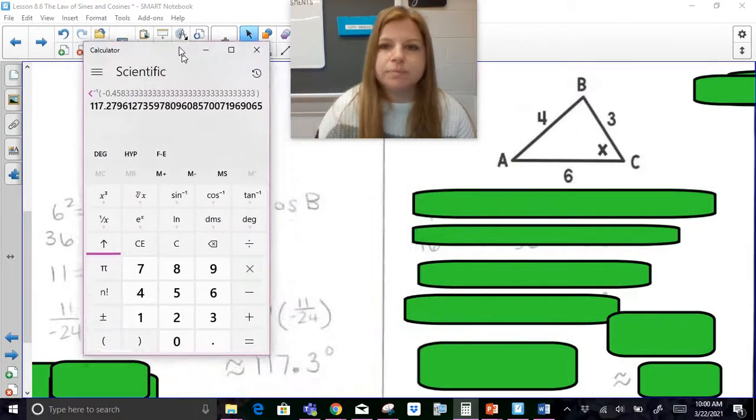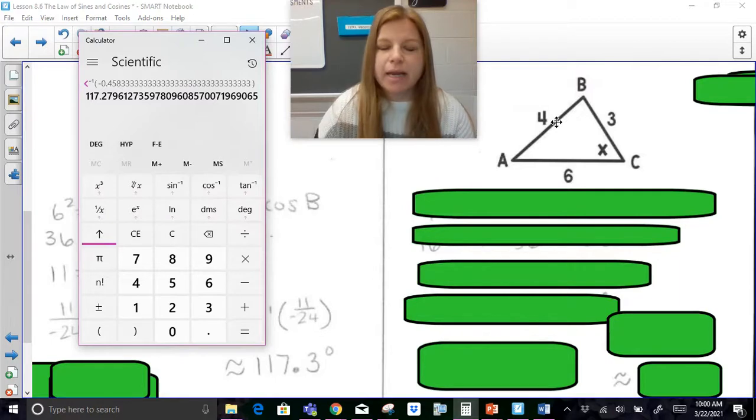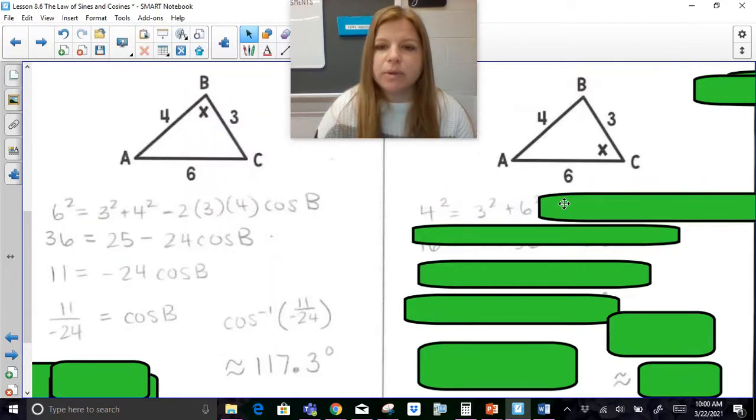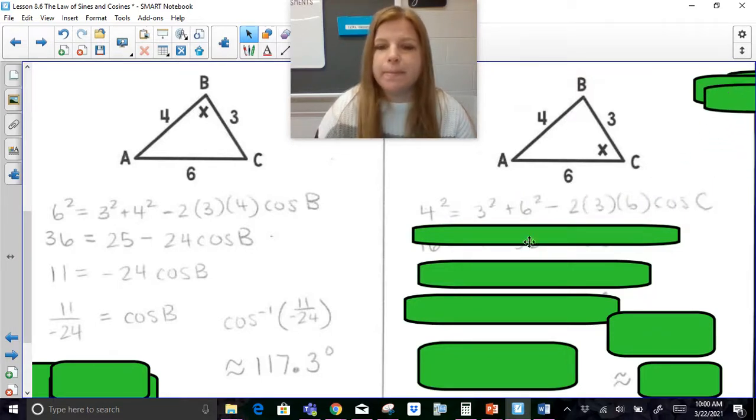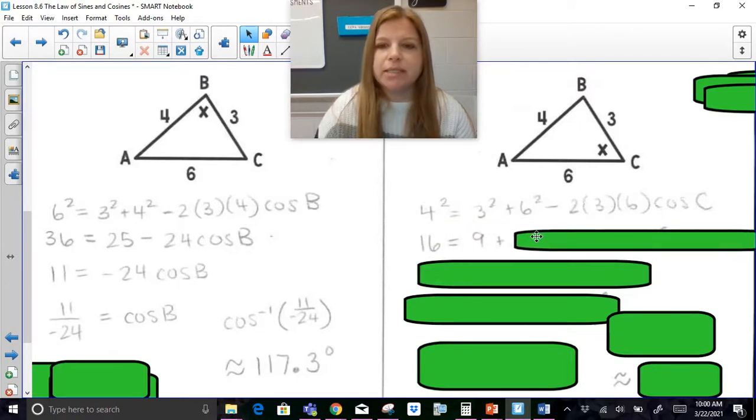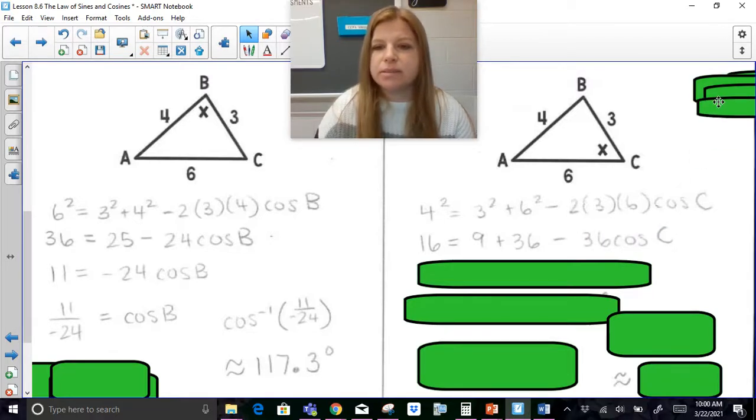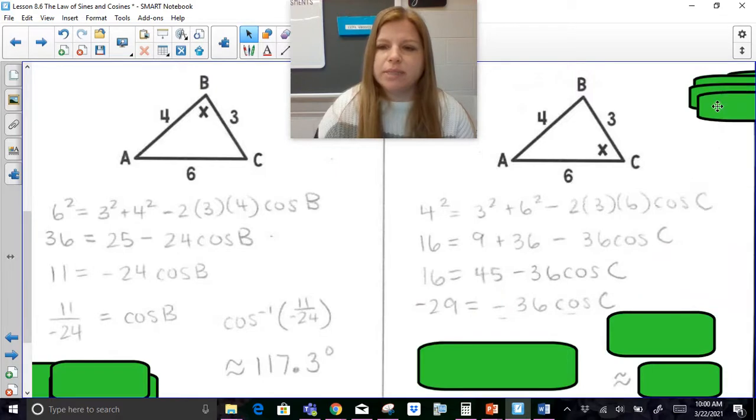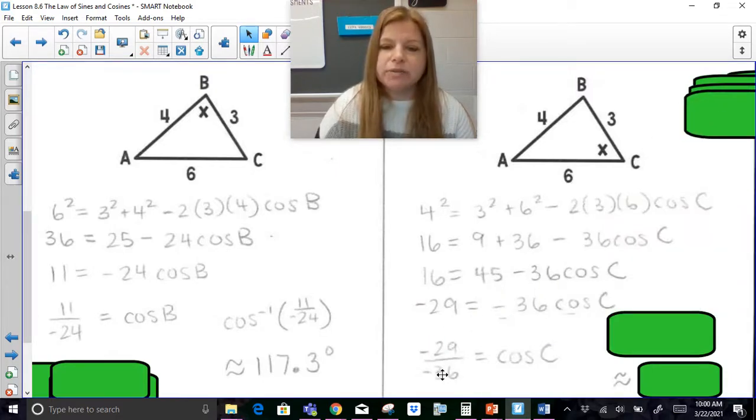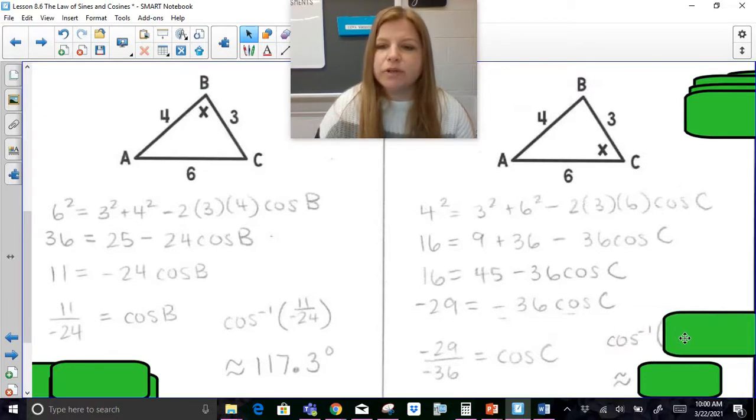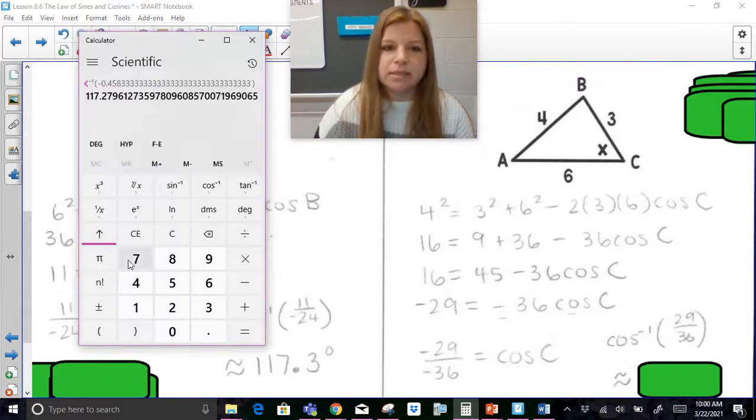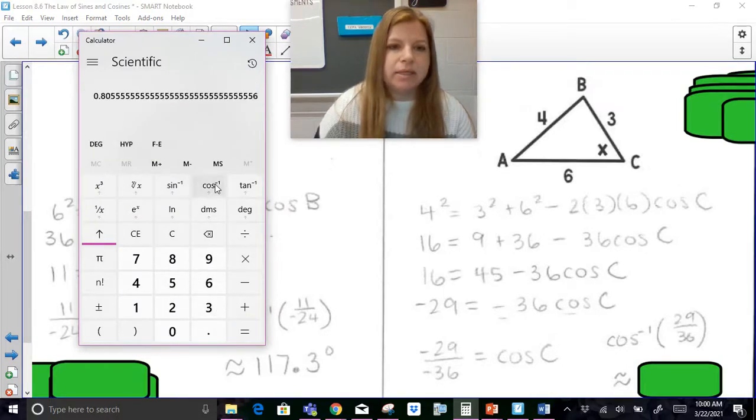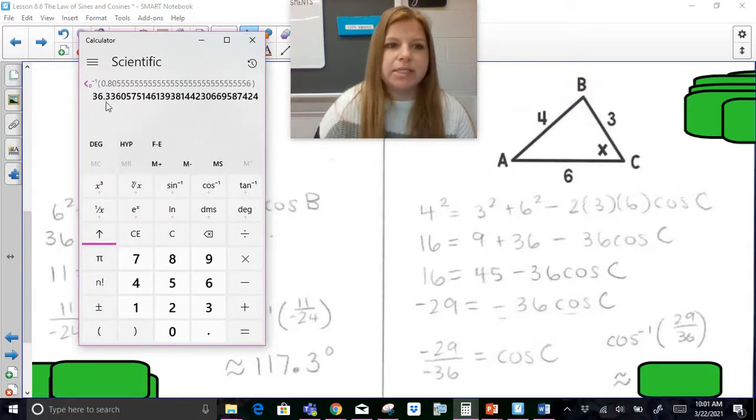And now for my last one here. So I'm solving for this angle. So the side opposite is 4 squared equals the sum of the squares of the other two sides minus 2 times 3 and 6 cosine C. 4 squared is 16. 3 squared is 9. 6 squared is 36. 2 times 3 times 6 is 36. Subtract 45 on both sides. Divide both sides by negative 36. Remember, a negative divided by a negative is a positive. So I'm really doing the inverse cosine now of 29 over 36. So 29 divided by 36, inverse cosine. And I end up getting 36.3 degrees.